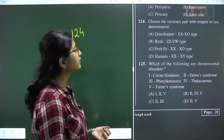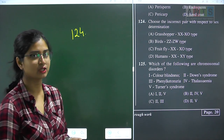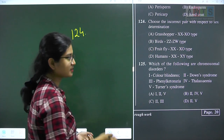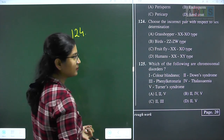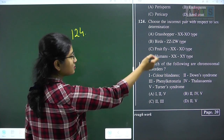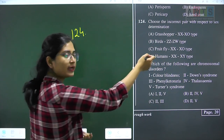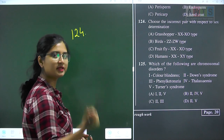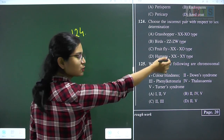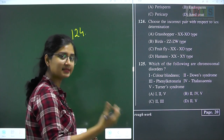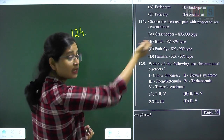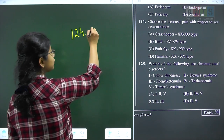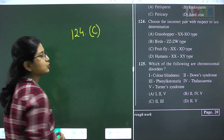Question 124: choose the incorrect pair with respect to sex determination. Grasshopper — XO type: correct. Birds — ZW type: correct. Fruit fly — XO type: incorrect, fruit flies have a sex determination mechanism similar to humans with XX/XY system, not XO. Humans — XX/XY type: correct. The incorrect pair is fruit fly with XO type. Question 124 answer is option C.